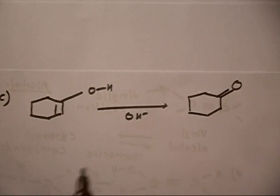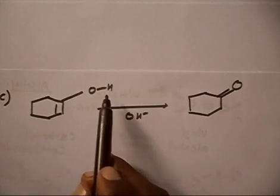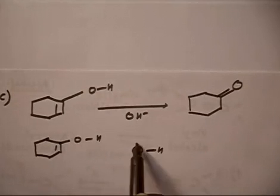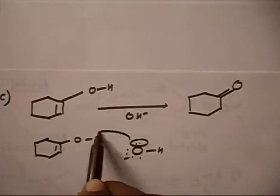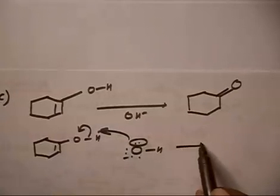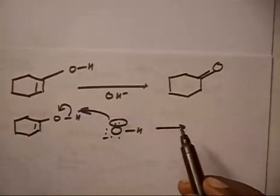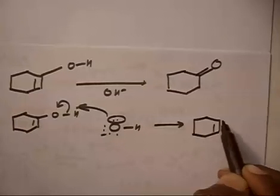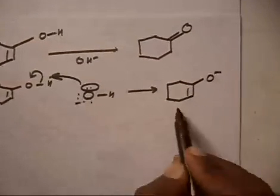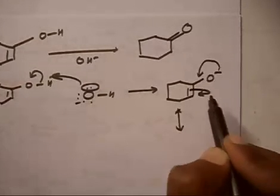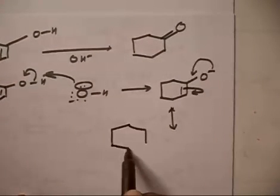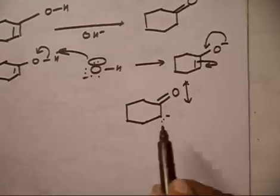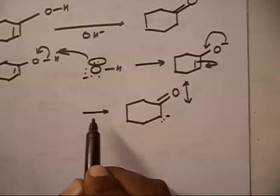In basic medium, OH minus acts as a base and takes the acidic H+ from the alcohol group. This is an acid-base reaction. After removing H+, we get an oxygen with a negative charge. We can then write a resonating structure — the negative charge moves so that we have O double bond with a negative charge on carbon.